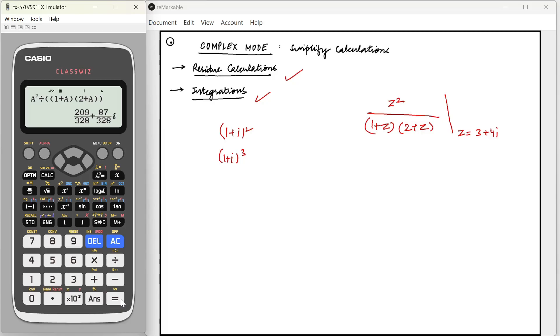If you really want to add something in your answers instead of directly writing it like this, we can also write it step by step. We can find out z square first. So z square by one plus z into two plus z is equal to minus seven plus twenty four i divided by one plus z, four plus four i, into two plus z, five plus four i.